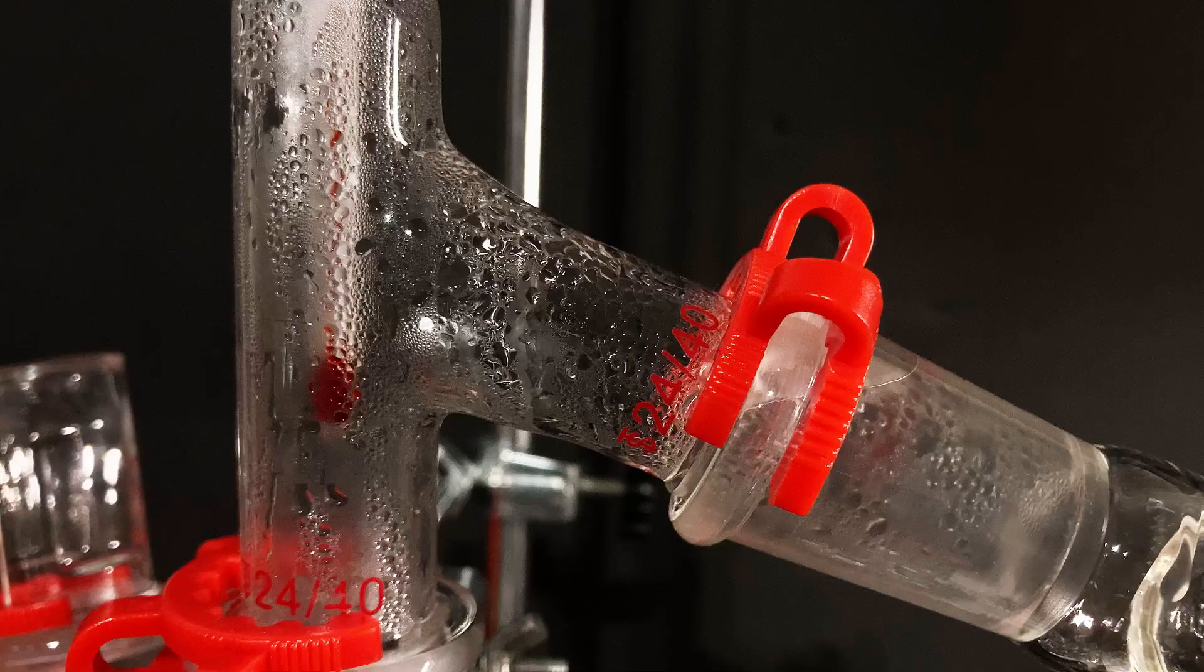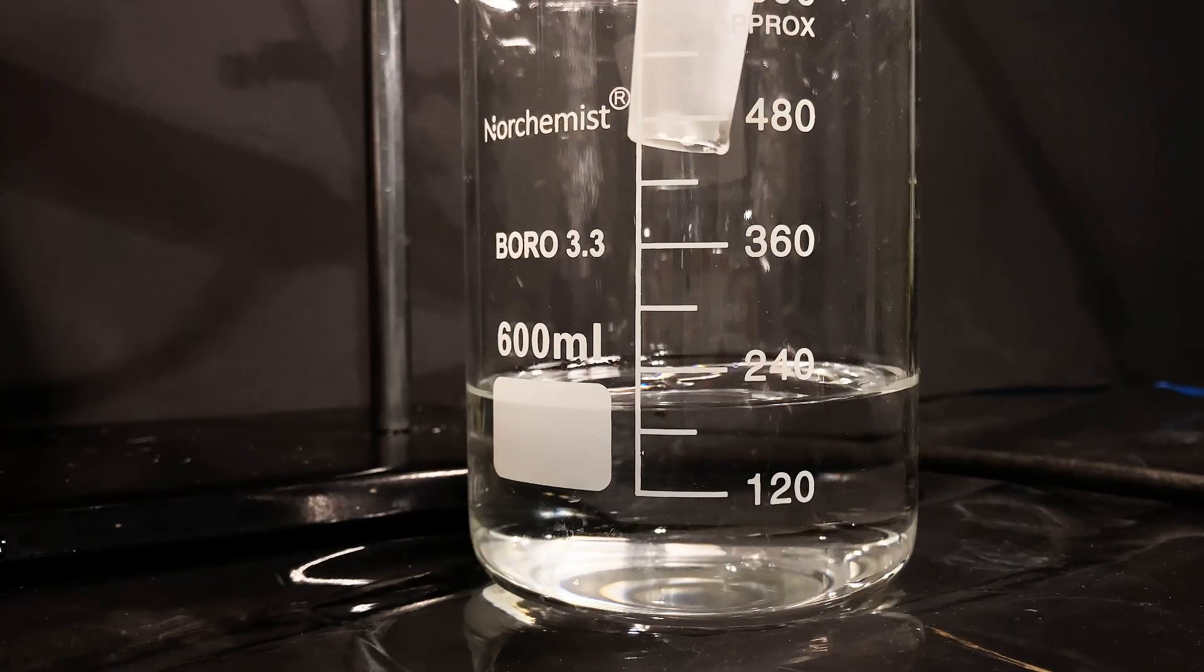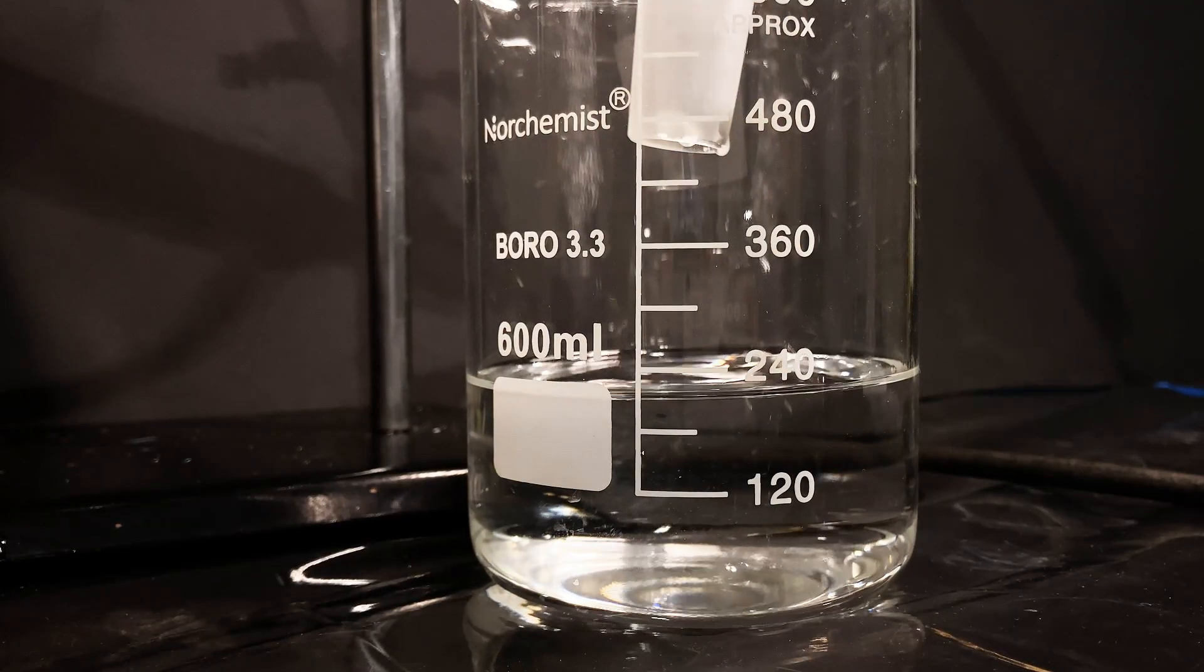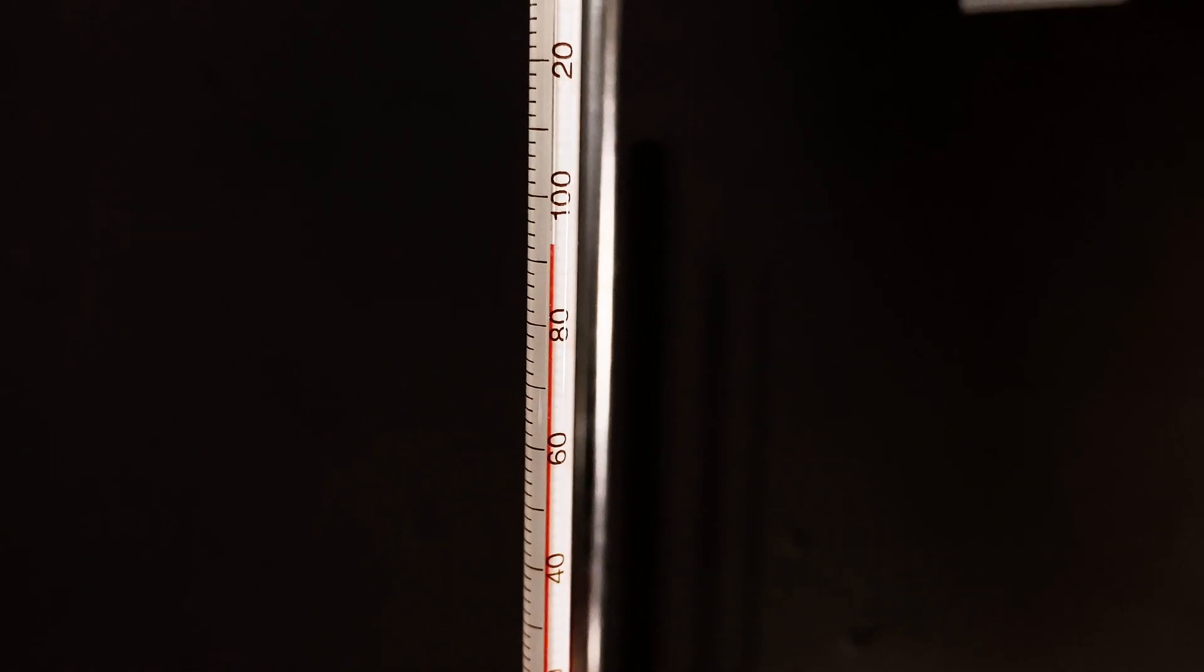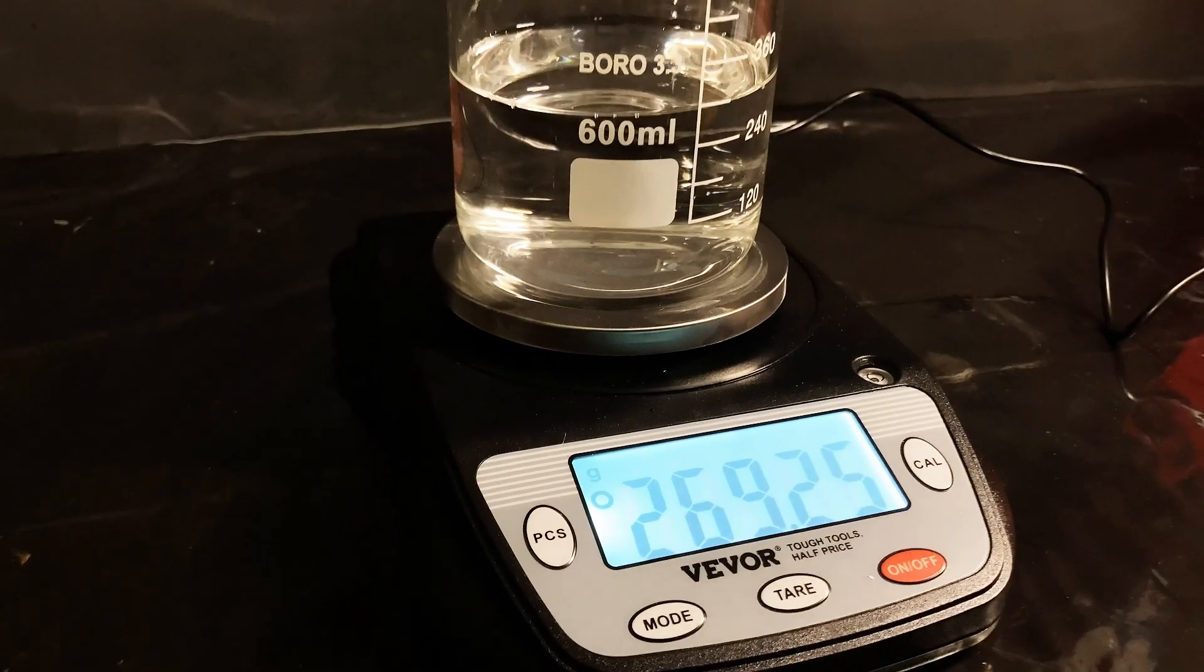I knew when the distillation was basically done when the temperature on the thermometer started rising again. I immediately turned off the heat when it went above 90°C, and I was left with this aqueous solution of isopropyl alcohol.